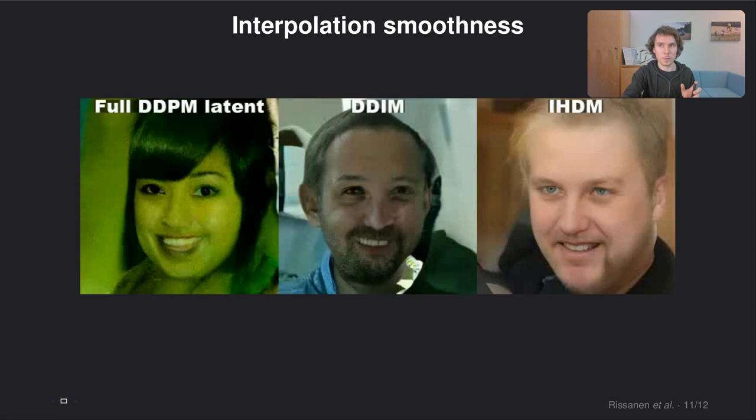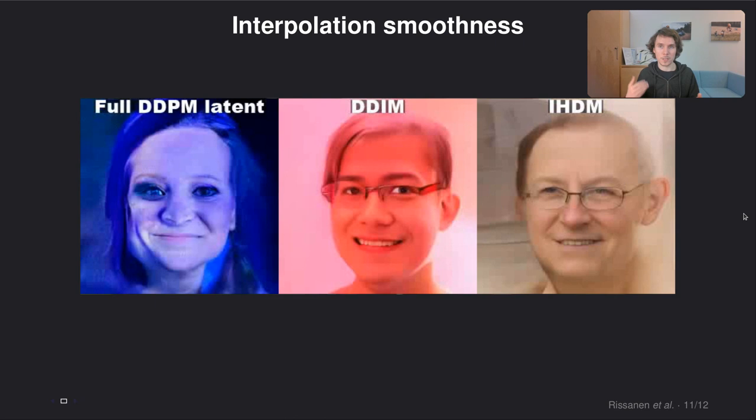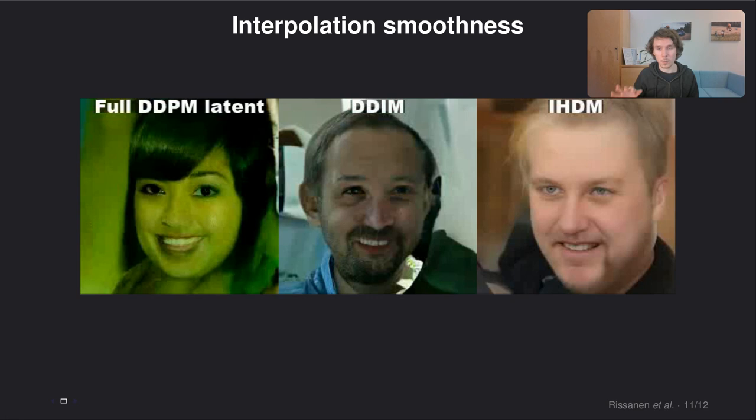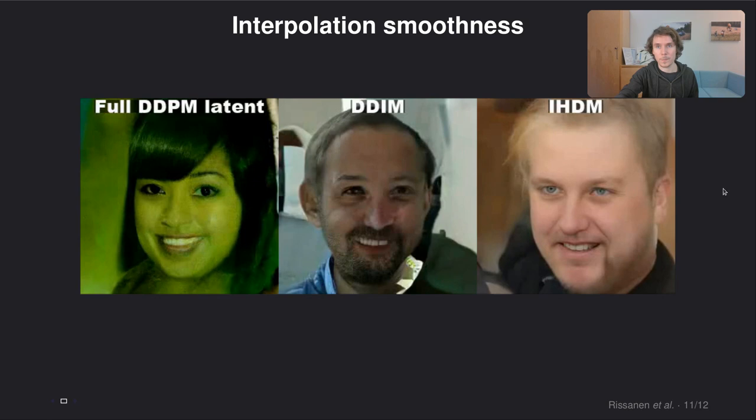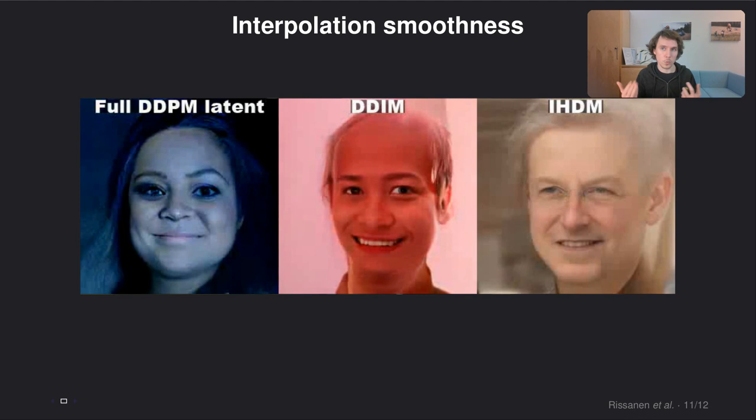For instance, if we do interpolations in the latent space of our model and compare it to the interpolations in similar standard diffusion models, we notice that the results are more smooth. The one on the right here is our model and the ones on the left are standard diffusion model variants. So it seems that using blurring in the forward process can set a sort of smoothness prior on images.